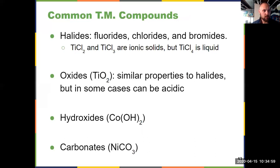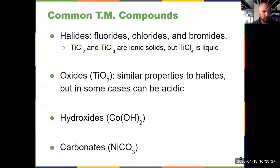What kinds of ligands do we tend to see paired with a transition metal? We can use halides — fluoride, chloride, and bromide. For example, titanium dichloride and titanium trichloride are ionic solids because titanium has lower oxidation numbers of +2 and +3 respectively. But at the higher oxidation number, TiCl₄ is a liquid — the bonding has changed. We also see oxides, which have similar properties to halides but can be acidic, as discussed in chapter 14. Transition metal hydroxides and carbonates are also common, and these tend to be insoluble in aqueous systems, with some exceptions.